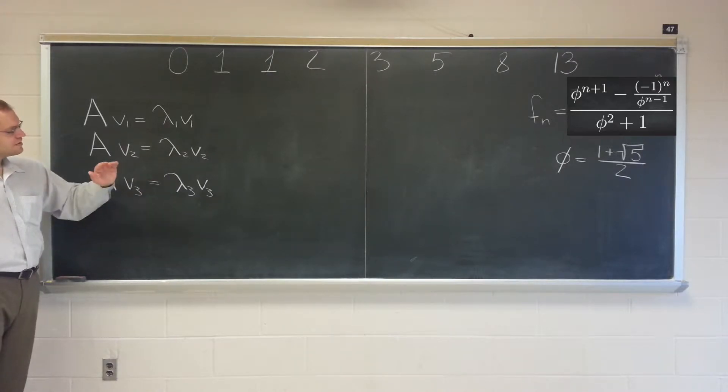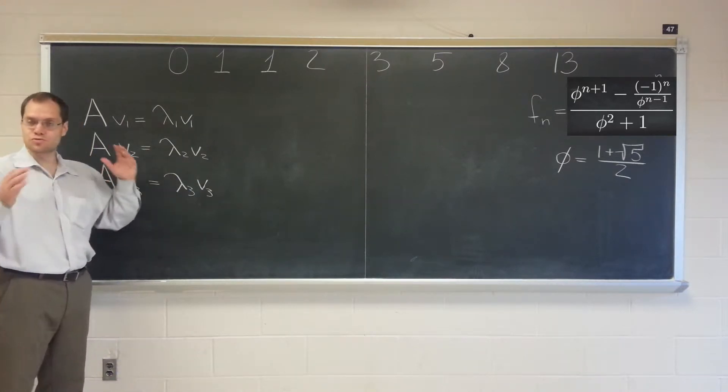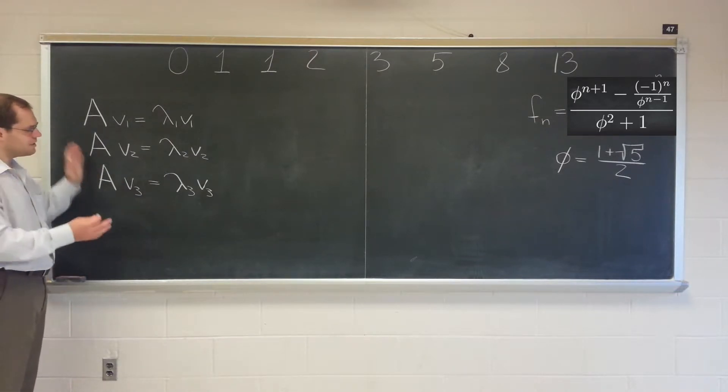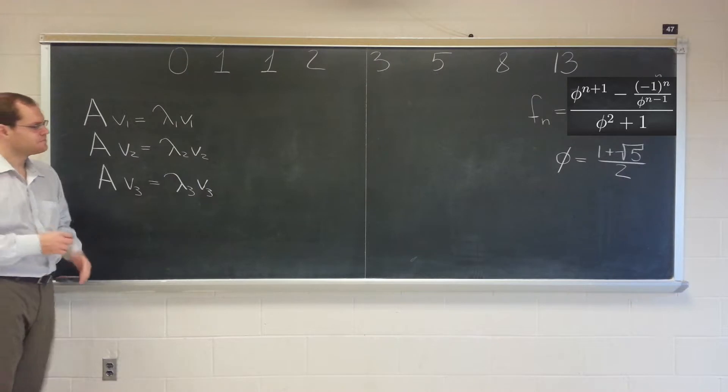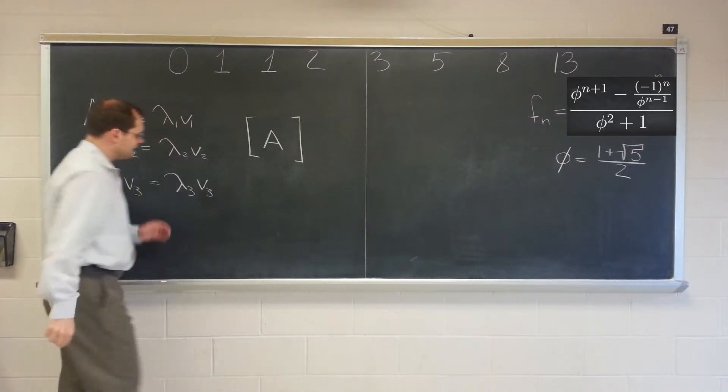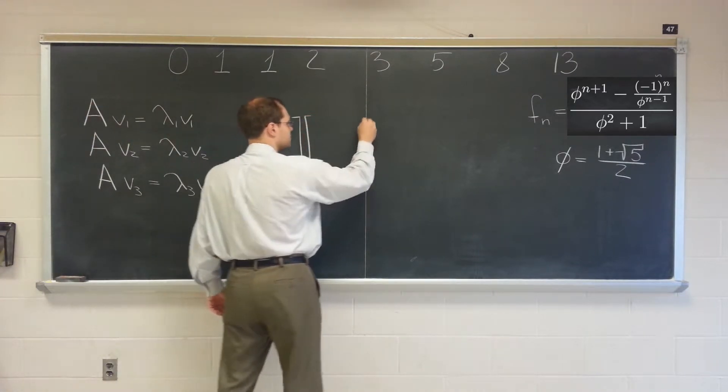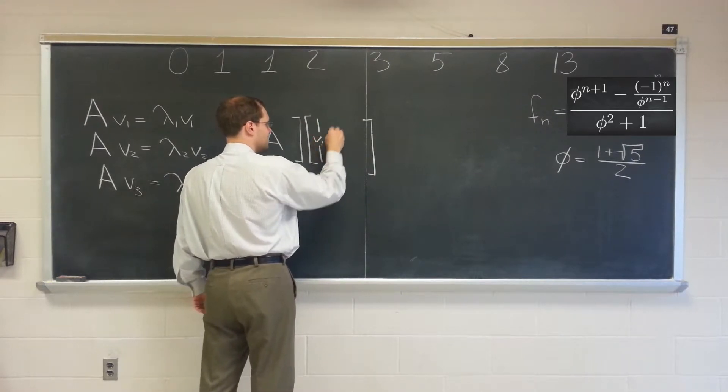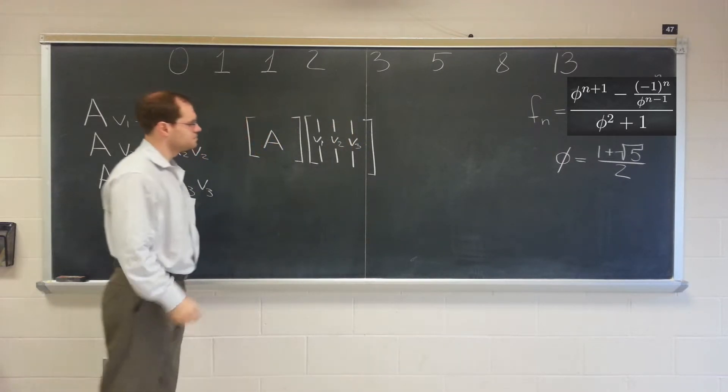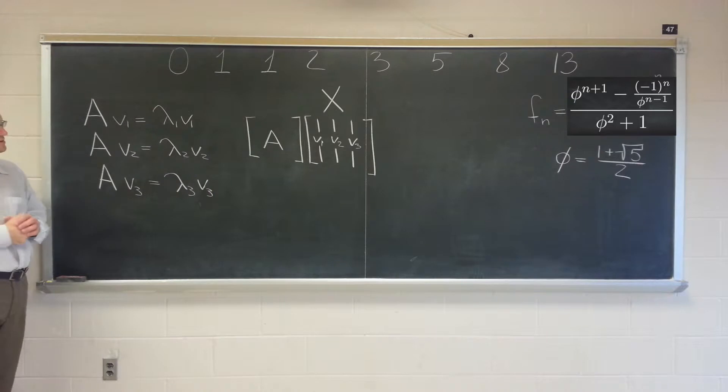And of course, it's the great advantage of the matrix notation that it is able, among other things, to group separate identities into a single matrix identity. So this is three, essentially, vector identities, and it's possible to group them into a single matrix identity. In the following way, you take the matrix A, I'll just draw it schematically like this, and then you arrange the vectors v1, v2, and v3 as columns into a matrix. The first column is v1, the second column is v2, and the third column is v3. And this matrix is actually called the capital matrix X, and it appears in all sorts of applications.